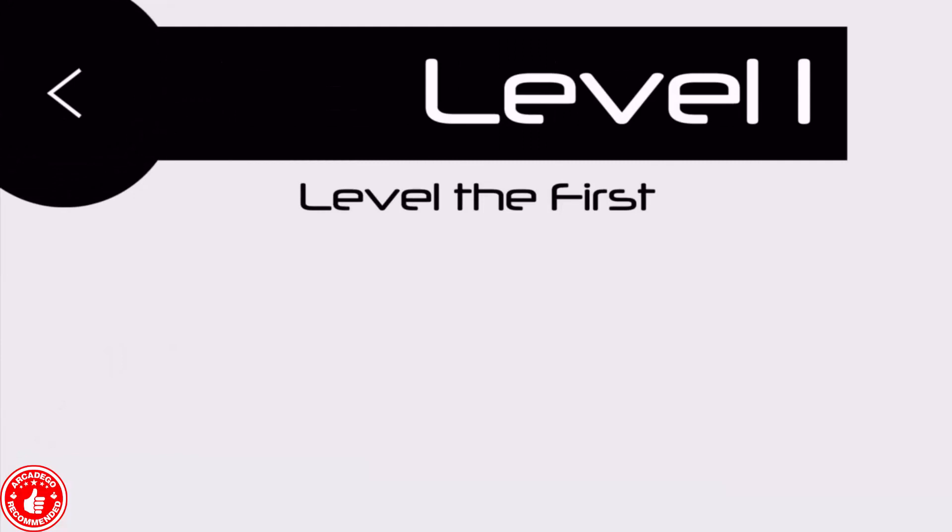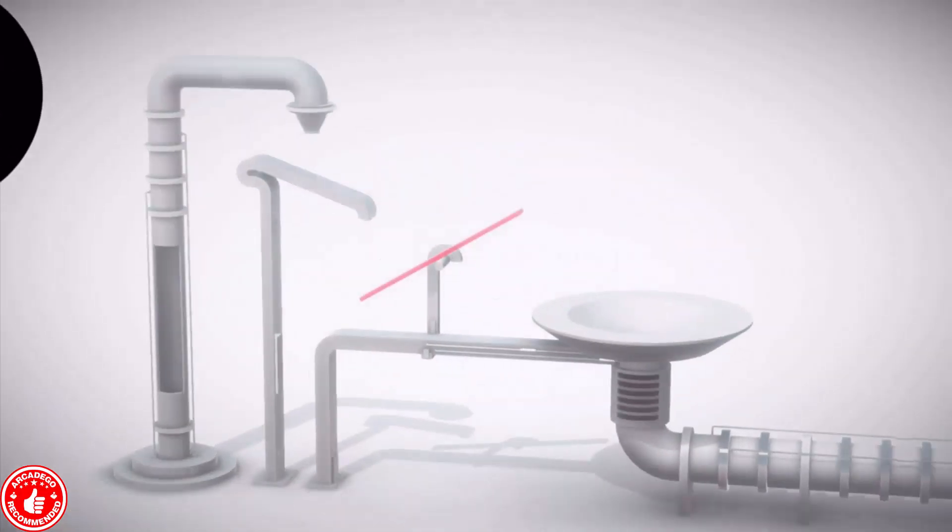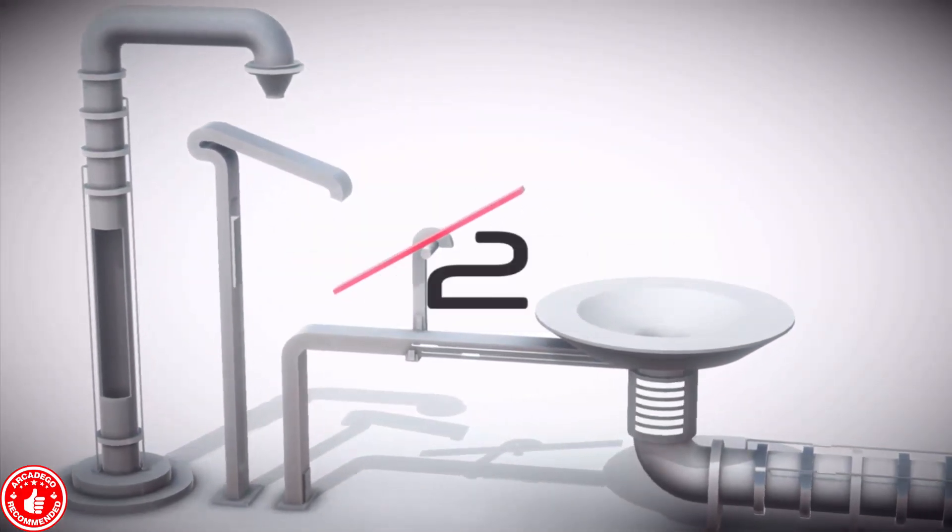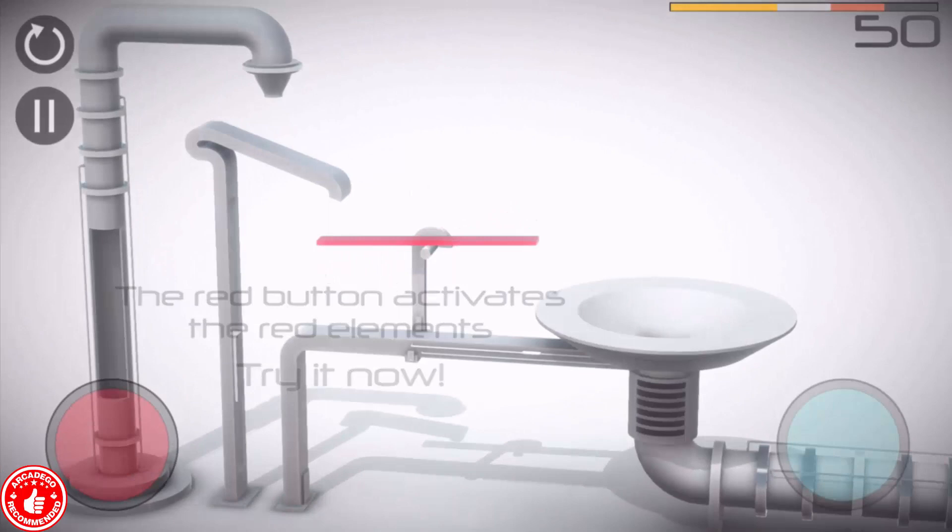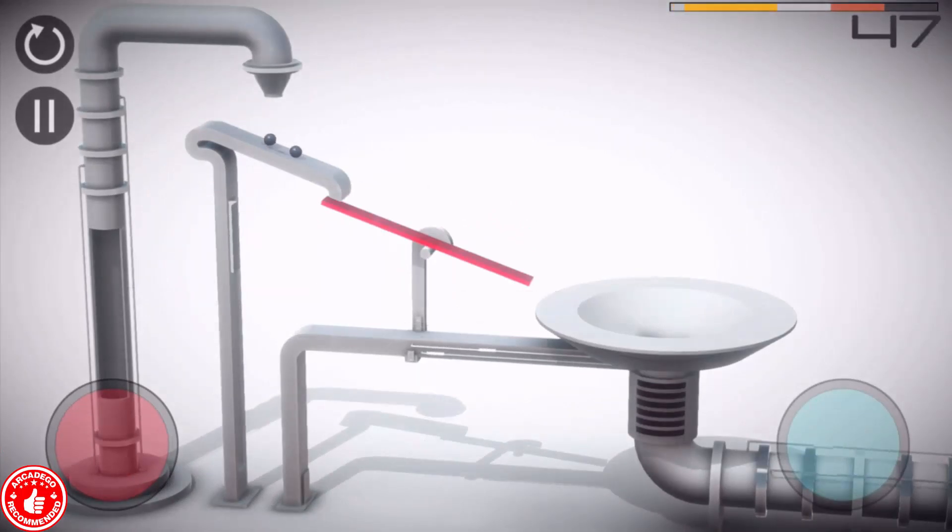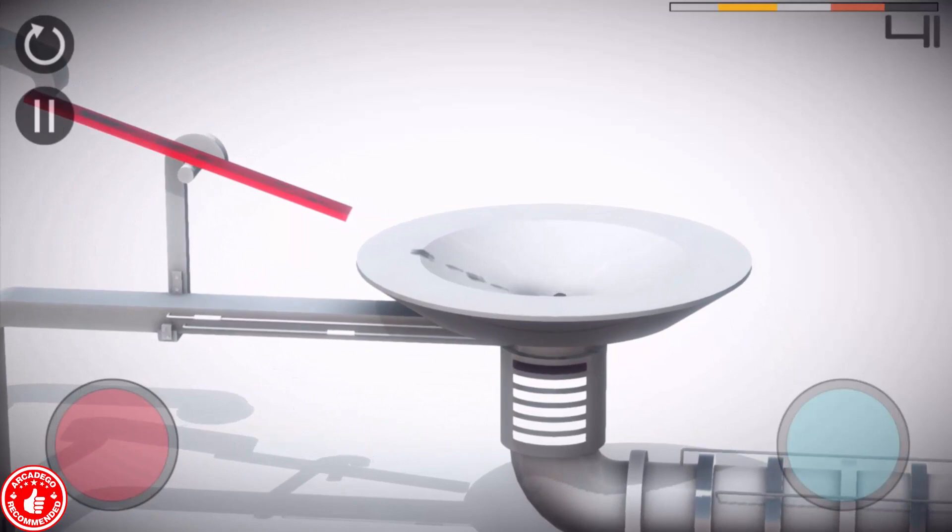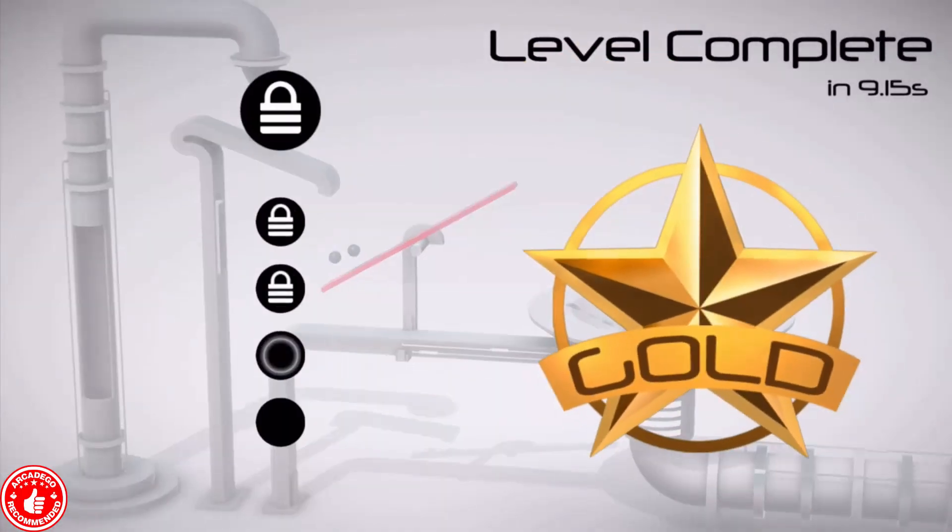So this is level the first. 3, 2, 1. I'm thinking, the red button activates the red element. Try it now. Boom. There we go. Now balls drop out of that faucet. I don't know what the hell that thing is. But it basically drops into that little hole right there, and you get to complete the level.